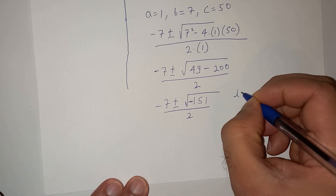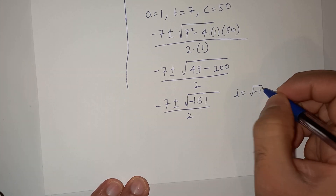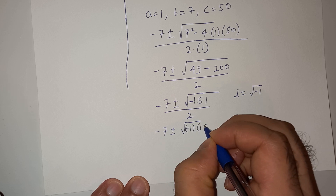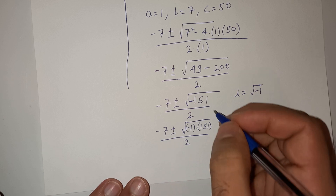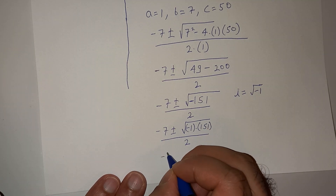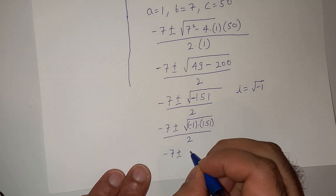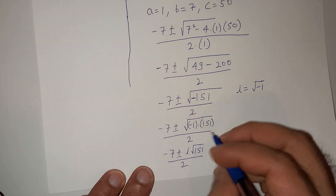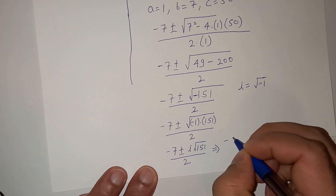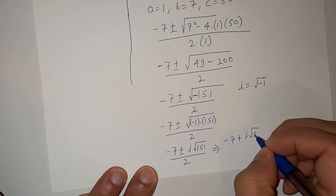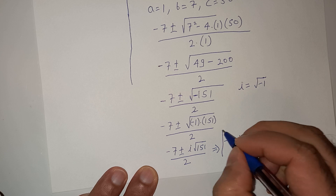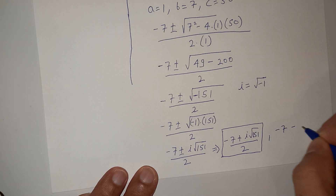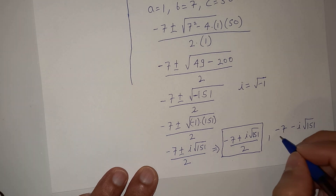Now we know that iota, which is a complex number, equals root(minus 1). So we can write root(minus 151) as root(minus 1) multiplied by root(151), which equals iota × root(151). So the two solutions are: x equals (minus 7 + iota√151) / 2 and x equals (minus 7 − iota√151) / 2.